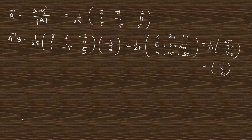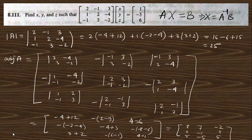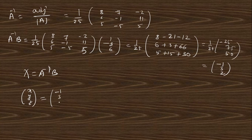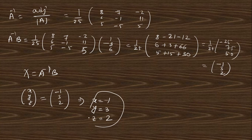Comparing X = A⁻¹B, where X = [x; y; z] and A⁻¹B = [-1; 3; 2], we can write x = -1, y = 3, z = 2. This is the solution to question 8.111.